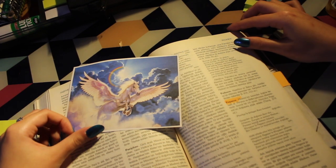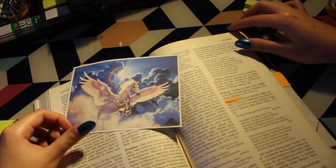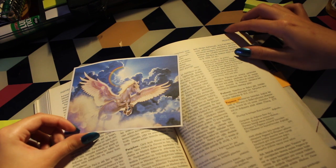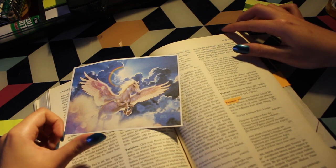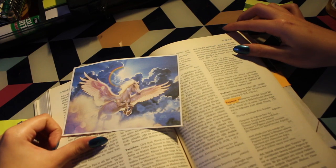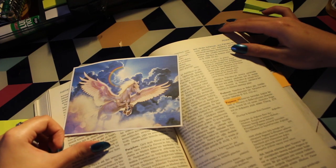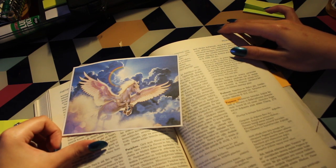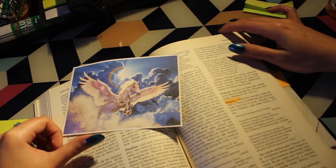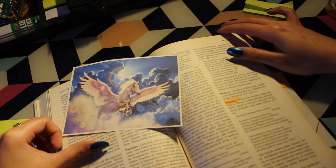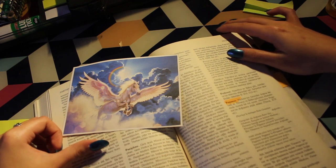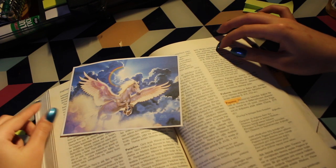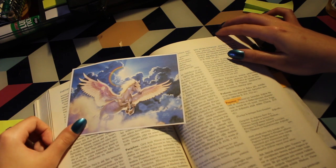Ceto, who united with Phorcys, gave birth to the Graeae. Ceto also gave birth to the Gorgons: Stheno, Euryale, and the unfortunate Medusa. When Perseus cut off her head, Chrysaor and Pegasus sprang from her blood. One received his name because he was born near the springs of Oceanus, the other because he held a golden sword in his hand. Pegasus left the earth behind and flew up toward the immortals. Now he dwells in Zeus's palace, carrying thunder and lightning in his name.